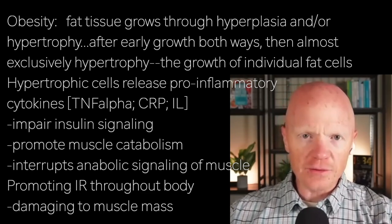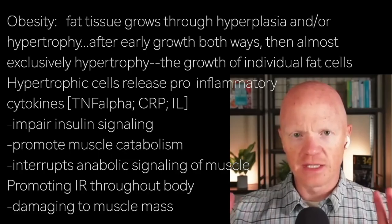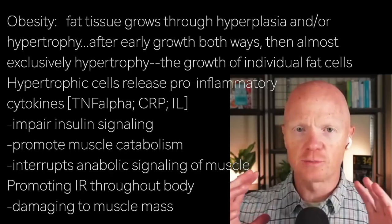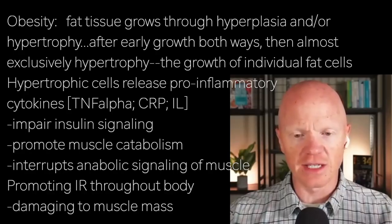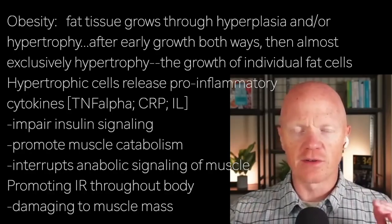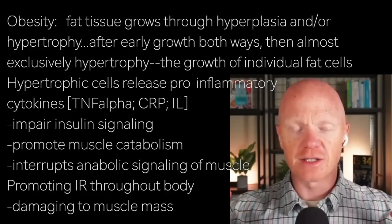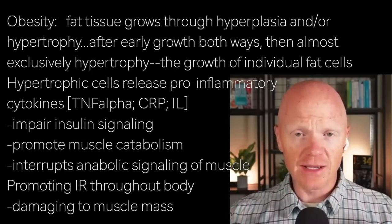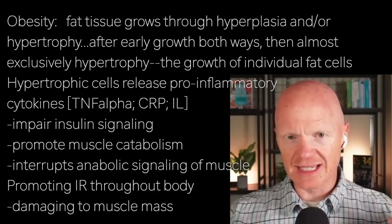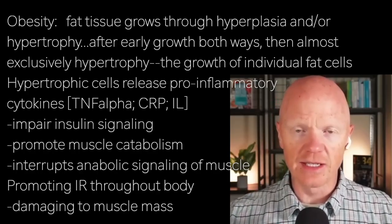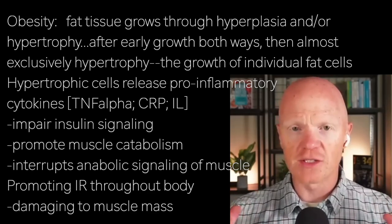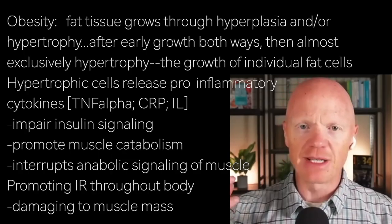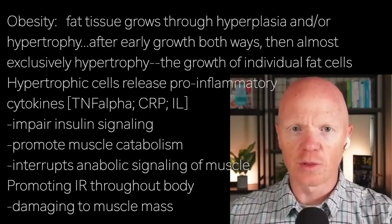Another feature of the hypertrophy of the fat cell, in addition to the inflammation, is that it becomes insulin resistant to prevent its further growth. As the fat cell gets too big, it starts to promote insulin resistance to stop its further growth. But at the same time, the inflammation it's leaking out causes insulin resistance systemically, and the overall metabolic milieu has changed in a way that further promotes insulin resistance throughout the body.